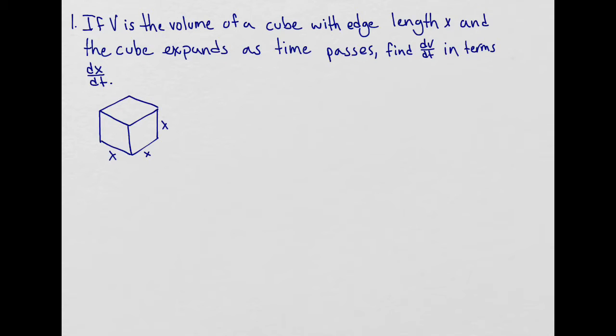So the question says that if V is the volume of a cube with edge length x, and the cube expands as time passes, find dV/dt in terms of dx/dt. So what the question is saying is that we have a cube that is expanding as time passes.